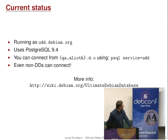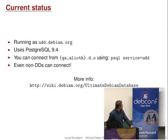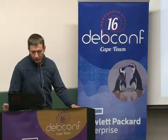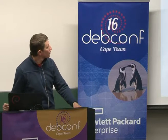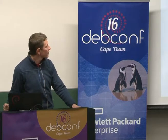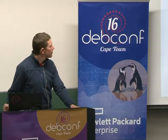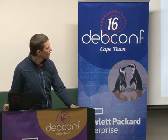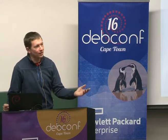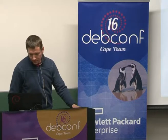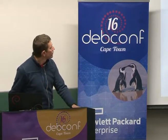It's currently running as udd.debian.org, but also a public mirror hosted by Ashish. It uses PostgreSQL 9.4. You can connect from qa.debian.org using a PSQL service, which means that even non-DDs can connect. There are a couple of tables not available if you don't connect using the guest DD account, but usually you can just connect using the guest account. The two unavailable tables are the LDAP table and the PTS subscription table. There's a wiki page with all the info about how to connect.